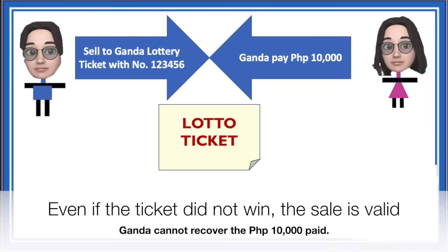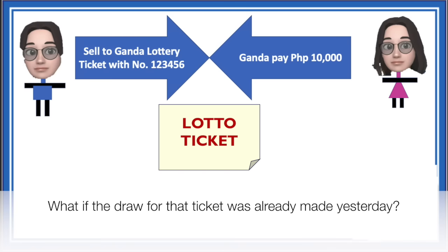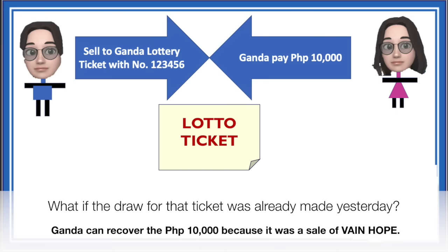Now, what if the lottery draw had actually already happened yesterday — before Ganda bought the ticket? In that case, Ganda can recover her payment from Poggy because the contract is void — what she bought is actually a vain hope, a hopeless case, because the draw for that ticket had already happened. There is no more possibility of hope. So that is an example of a vain hope, which under Article 1461 is void.